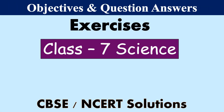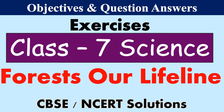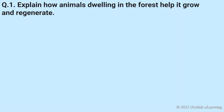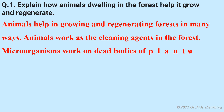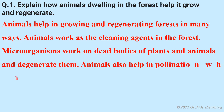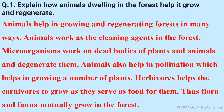Objectives and question answers on the lesson 'Forests: Our Lifeline', Class 7 Science. Question: Explain how animals dwelling in the forest help it grow and regenerate. Animals help in growing and regenerating forests in many ways. Animals work as cleaning agents in the forest. Microorganisms work on dead bodies of plants and animals and decompose them. Animals also help in pollination, which helps in growing numbers of plants. Herbivores help carnivores to grow as they serve as food for them. Thus, flora and fauna mutually grow in the forest.